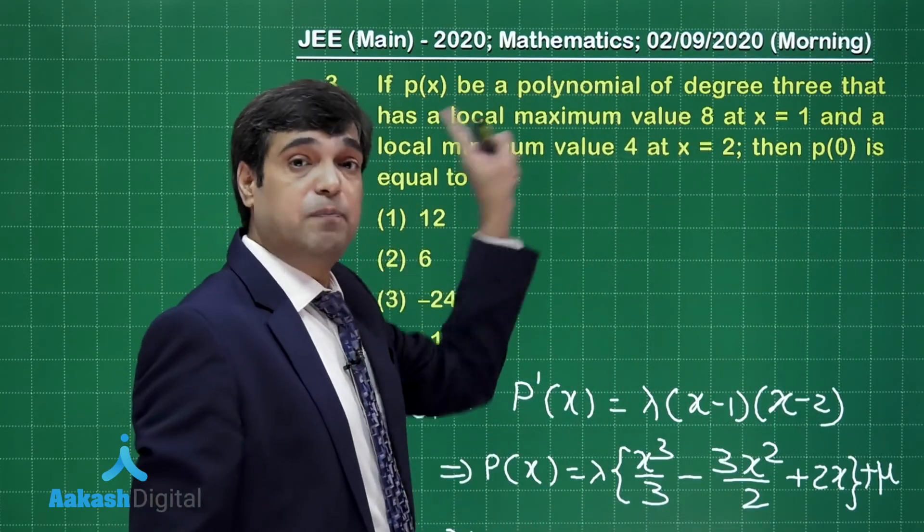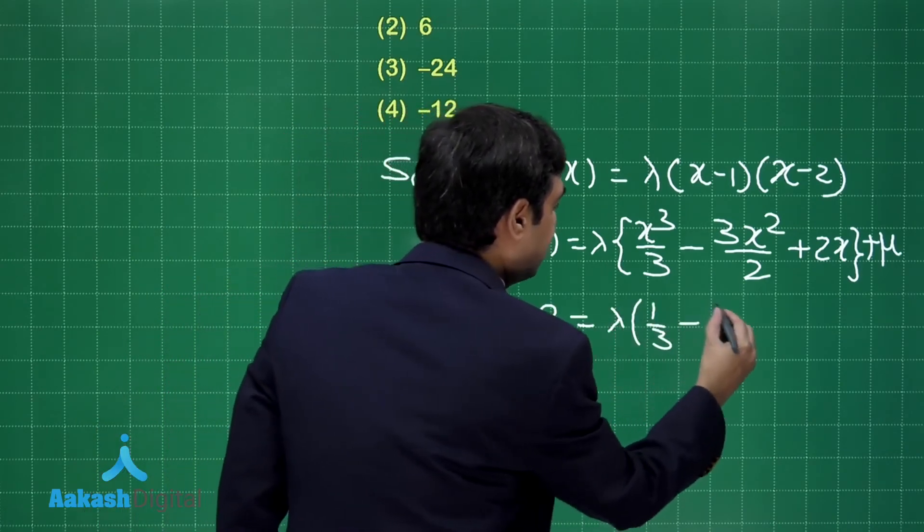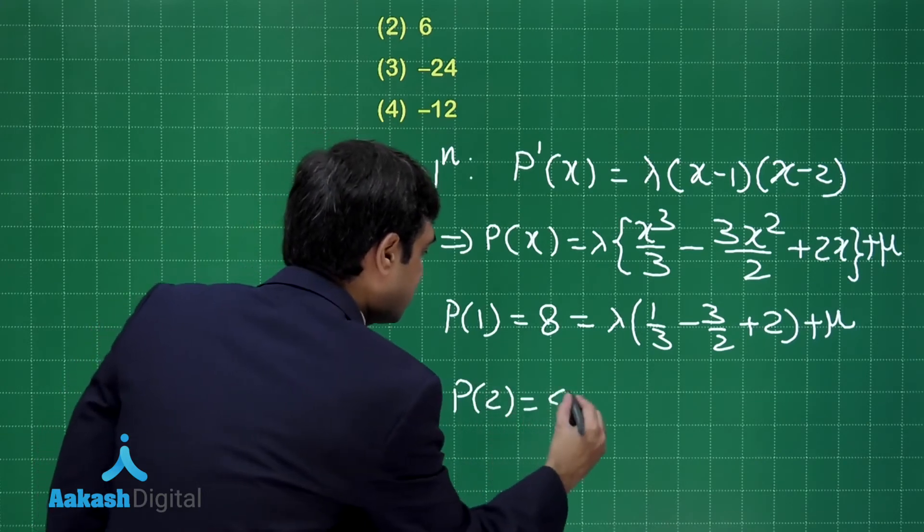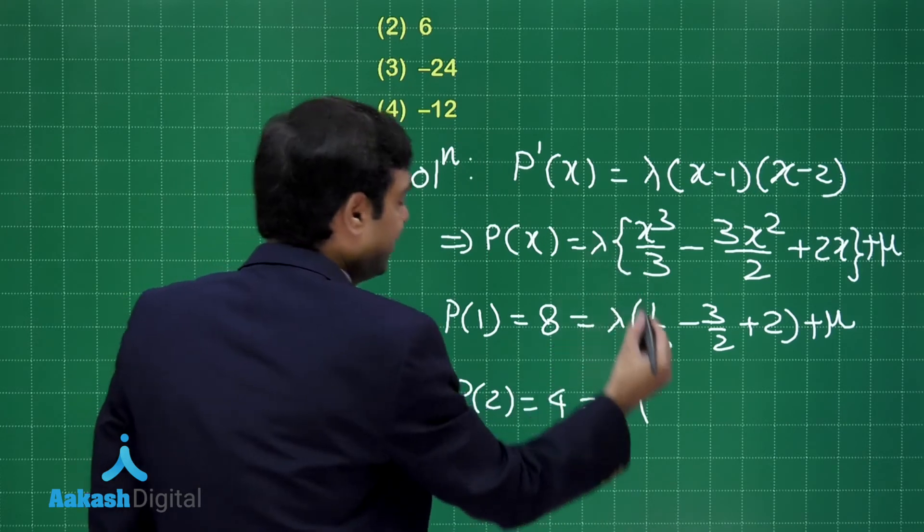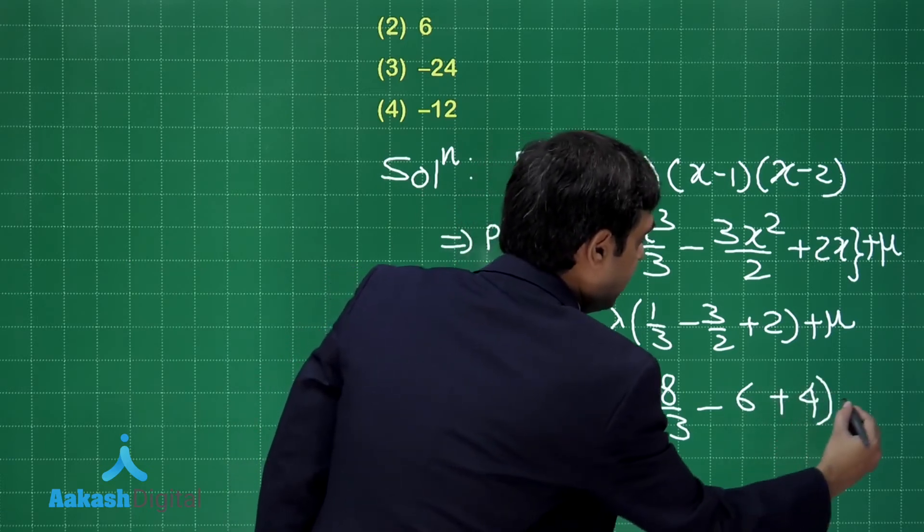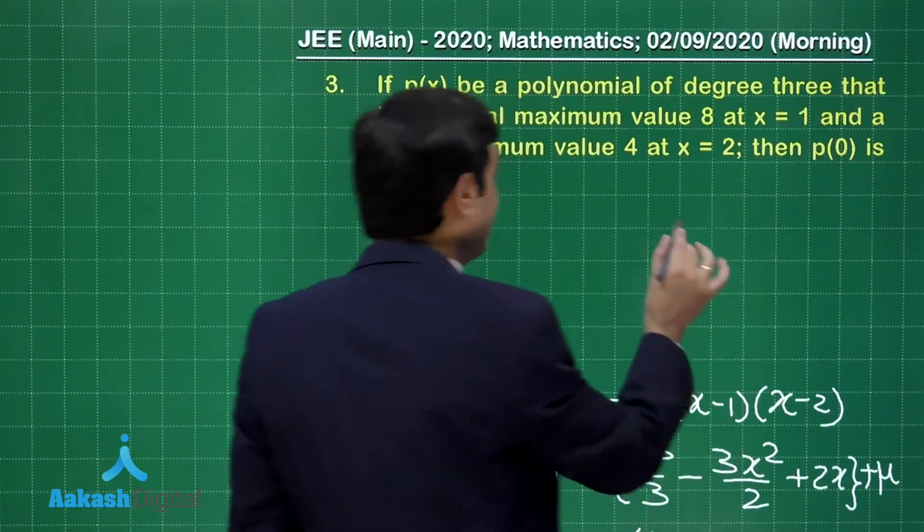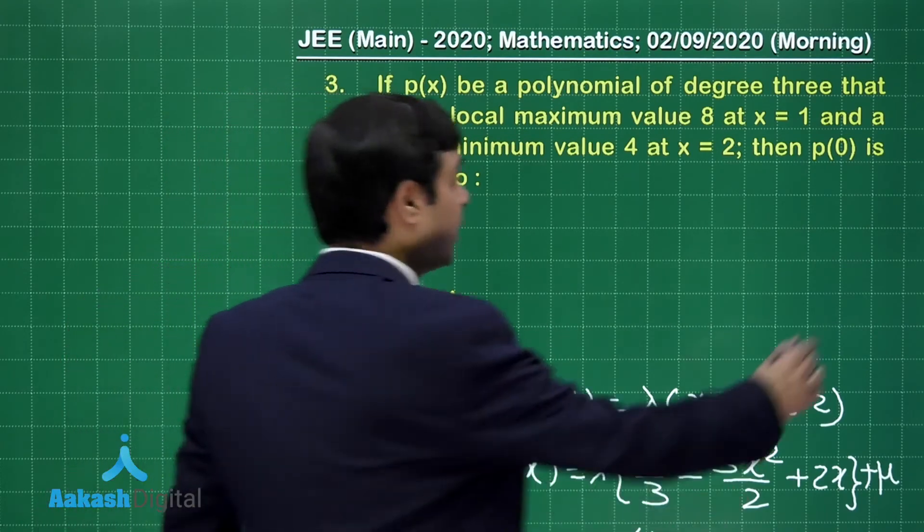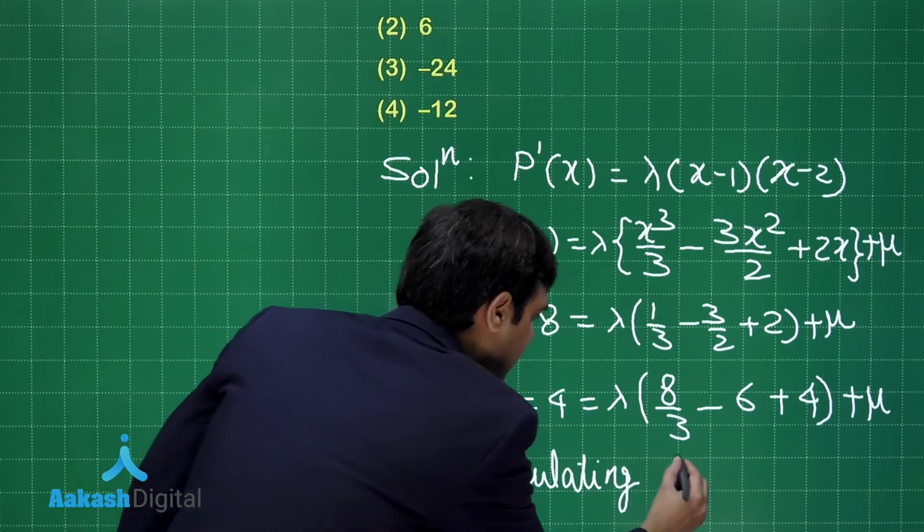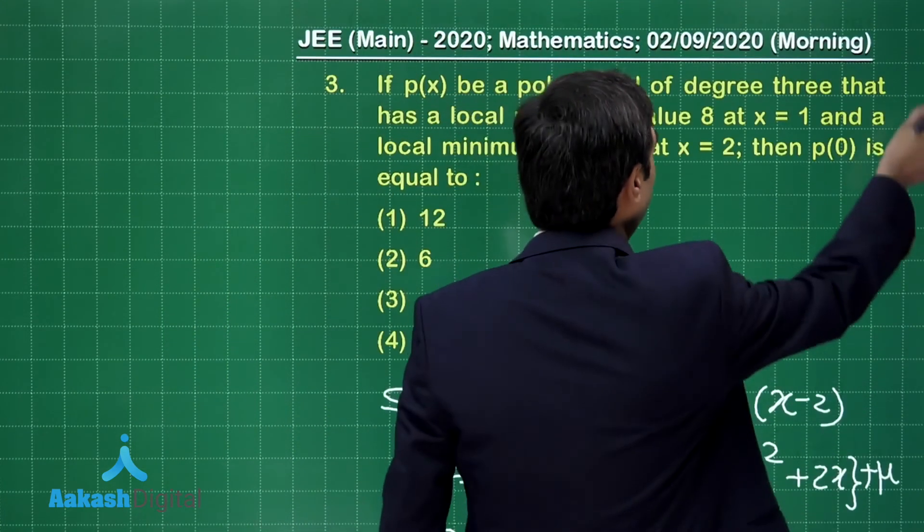p(1) is given to me as 8, and p(2) is 4 because maximum and minimum values are mentioned. So we have 8 = λ(1/3 - 3/2 + 2) + μ. And p(2) which is 4 = λ(8/3 - 6 + 4) + μ. Simple calculation required.